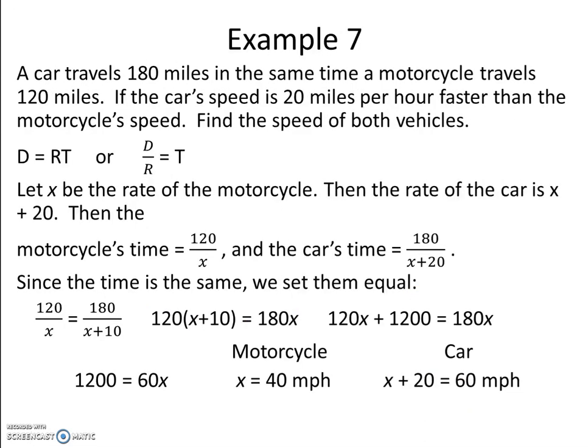Example 7 is another word problem. A car travels 180 miles in the same time a motorcycle travels 120 miles. If the car's speed is 20 miles per hour faster than the motorcycle's speed, find the speed of both vehicles. We have to recall that distance equals rate times time.